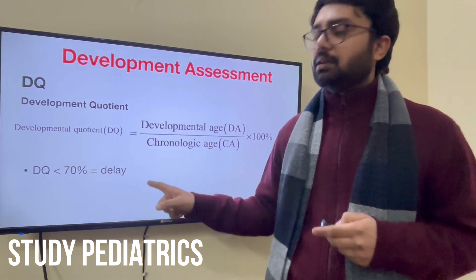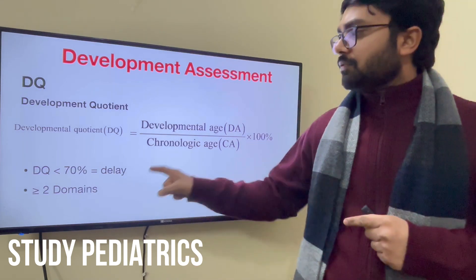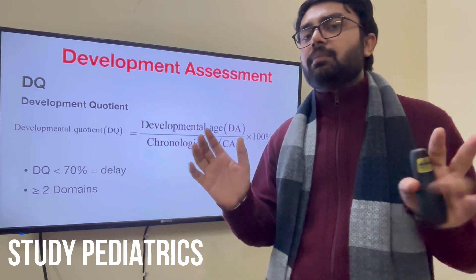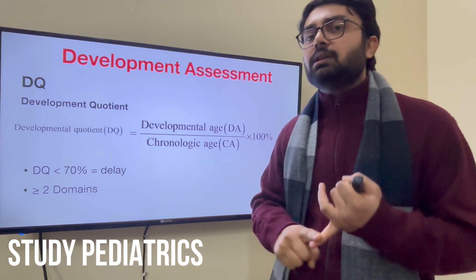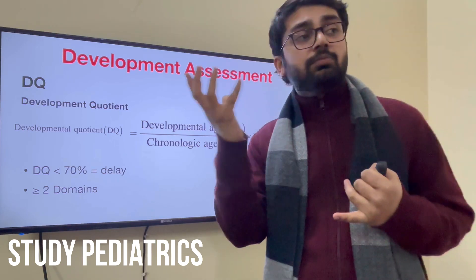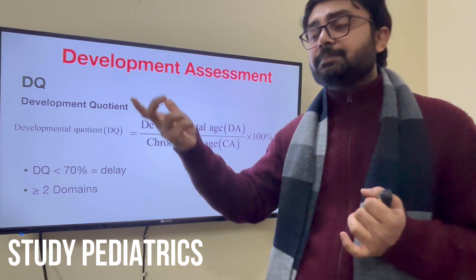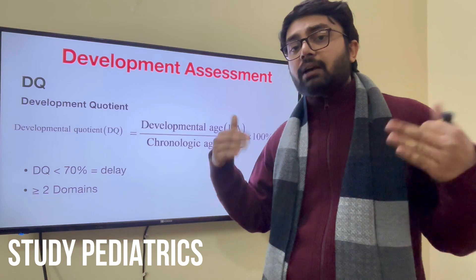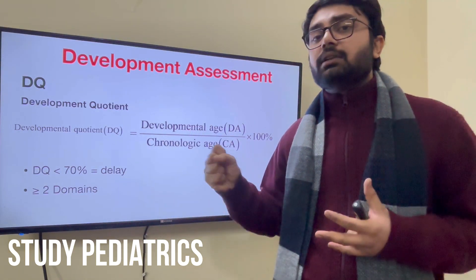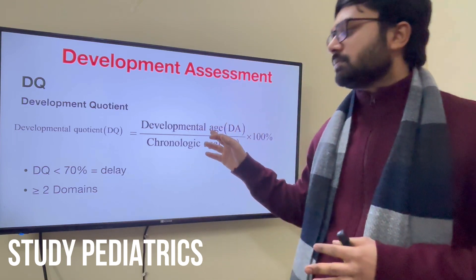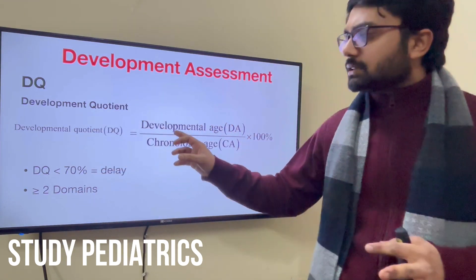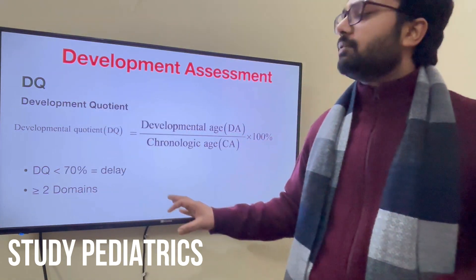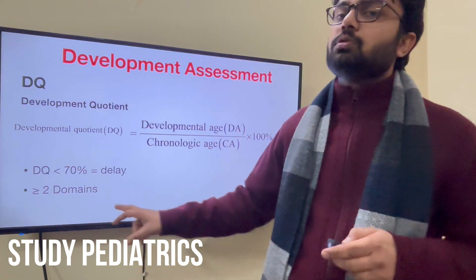So it is developmental delay. What we have to look for is that more than 2 domains must be affected. For example, in the previous case, if the child comes only with a delay of neck holding, but all other development up to 6 months is present — the child says bisyllable words, grasps with eyes, moves with objects, hears, rotates his head towards objects, and has social anxiety — he has all milestones of 6 months except gross motor. The DQ in gross motor is less than 70, but all others are fine. He will not be labelled as developmental delay unless more than 2 domains are affected.